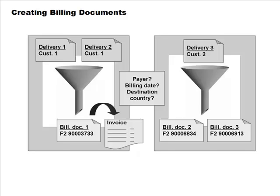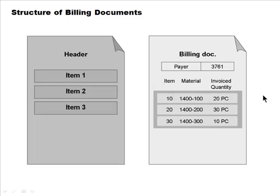Billing documents are created against deliveries. You can combine multiple deliveries into one billing document, or take a delivery and split it into multiple billing documents — both are possible. The structure of a billing document has header and item views, just like a delivery document.